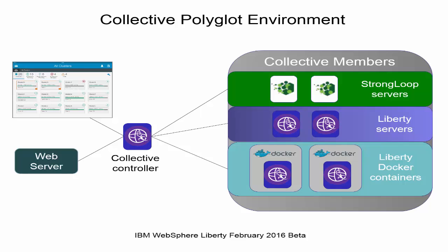All these server types may be further managed with collective features like dynamic routing using IBM HTTP Server or DataPower, auto scaling, and health management. This concludes this demonstration of managing an on-premise polyglot environment with WebSphere Liberty collectives.